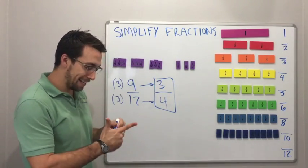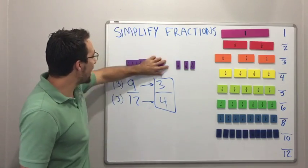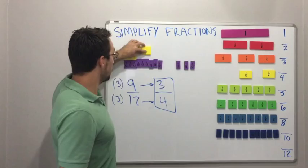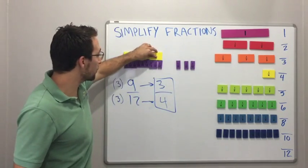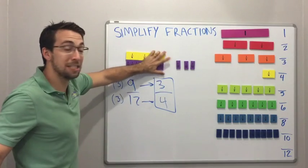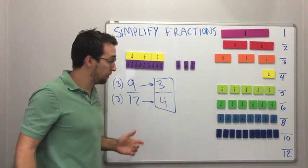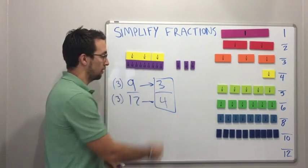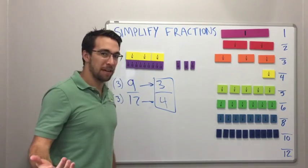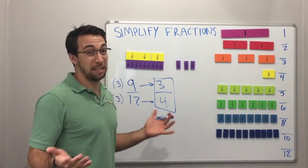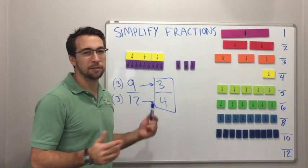3 fourths. Watch this. So 9 twelfths is the same as 1 fourth, 2 fourths, 3 fourths. Guys, this is what it means to simplify or reduce a fraction. 9 out of 12, 9 twelfths is the exact same thing as 3 fourths. 3 fourths is easier to think about. Oh, I have 3 quarters. I got 3 quarters of a dollar. That's a little bit different than thinking, oh, I have 9 twelfths.